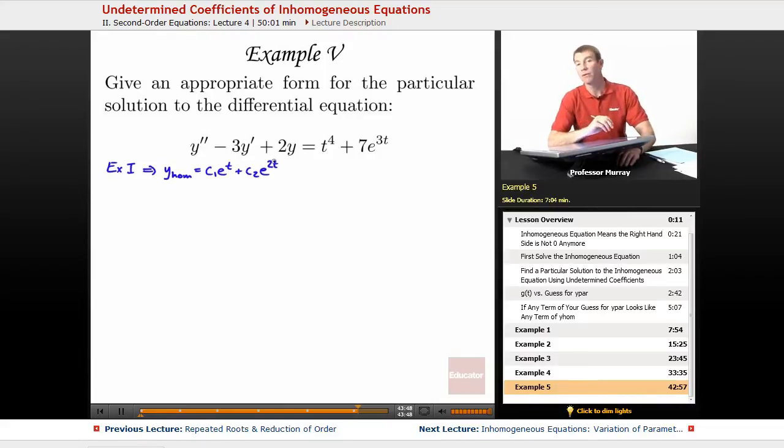And then, the way you guess a solution to the inhomogeneous equation is you use functions that look like the right-hand side. Now, in this case, we've got a kind of combination right-hand side. There's a t to the fourth term and there's an e to the 3t term. We're going to treat those totally separately and solve for those completely separately.